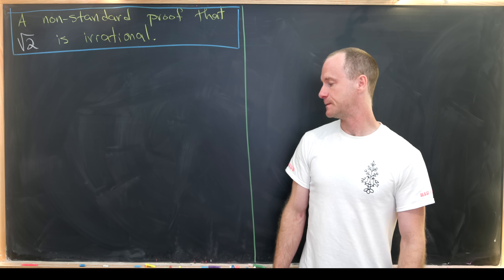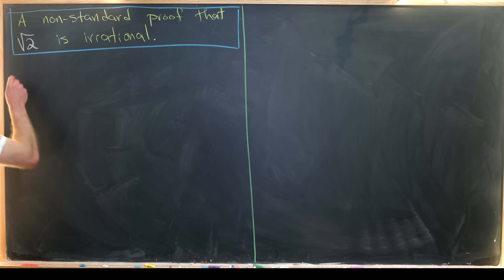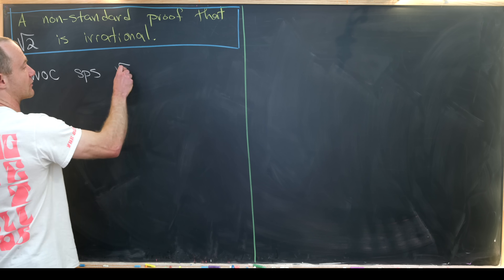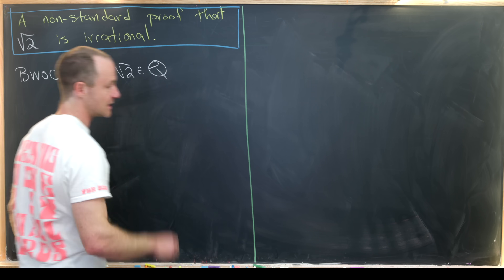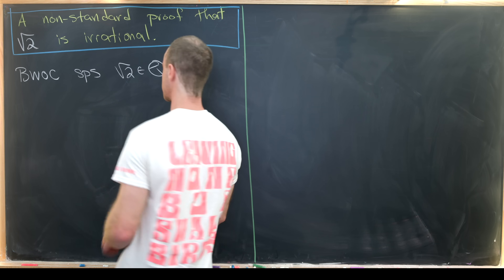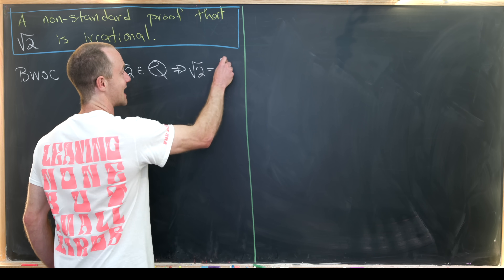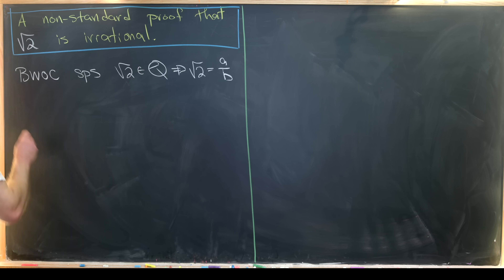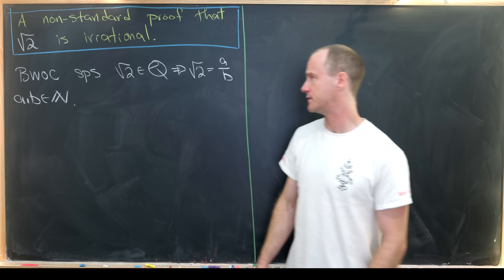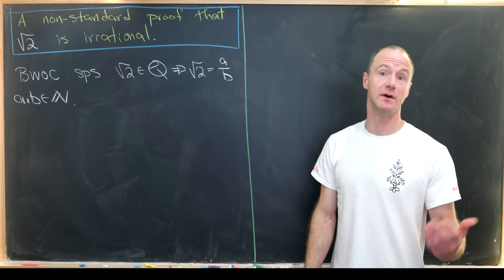So let's see how we can get started. Just like the normal proof, we will do this by way of contradiction. By way of contradiction, suppose that the square root of two is a rational number, and then somehow we obviously want to end up with a contradiction. If the square root of two is a rational number, then that means we can write the square root of two as a over b, where a and b are both natural numbers — that's because the square root of two is obviously positive, so we can take both of those integers to be positive.